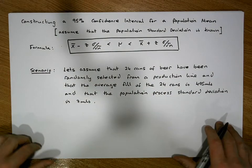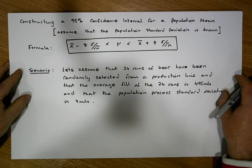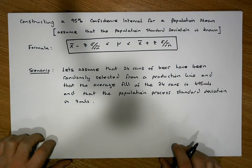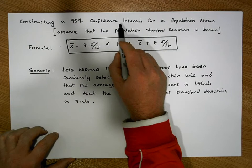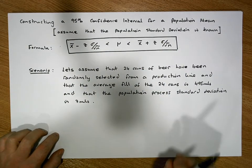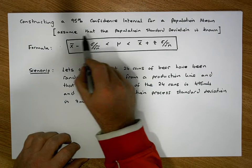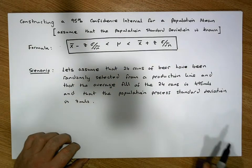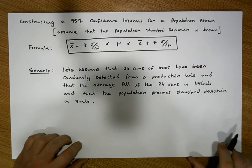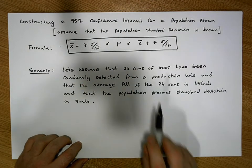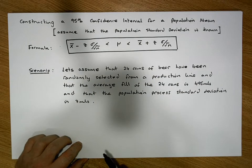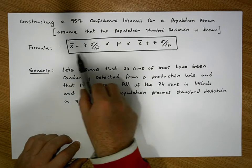Hi guys, this is Jonathan Lambert with the Mathematics Development and Support Service at the National College of Ireland. This short video is going to detail how to construct a 95% confidence interval for a population mean. In this particular calculation we're going to assume that the population standard deviation is known in advance, and because it is known, this confidence interval can be constructed using this particular formula here.